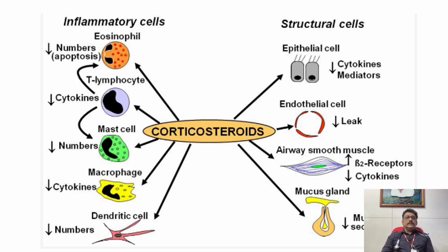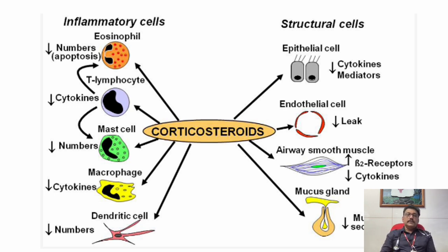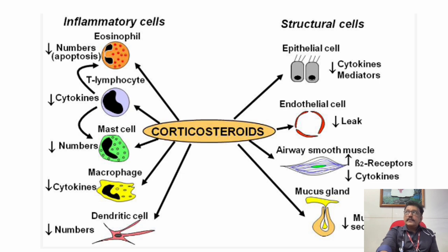The actions of steroids include: eosinophil numbers are reduced; T lymphocytes reduce cytokines; mast cells (which have a major role in asthma) reduce in numbers; macrophages reduce cytokines; dendritic cell numbers are reduced. Epithelial cells reduce cytokines, endothelial cells reduce leak, airway smooth muscles reduce contraction and relax. Mucous glands reduce secretions. Altogether, steroids have anti-inflammatory, anti-secretory, and anti-allergic actions, but they also have their own side effects.